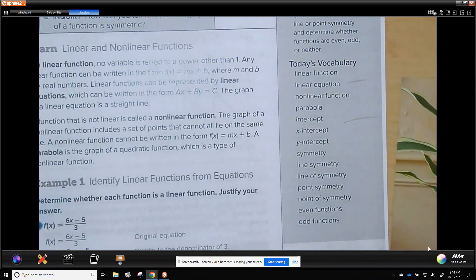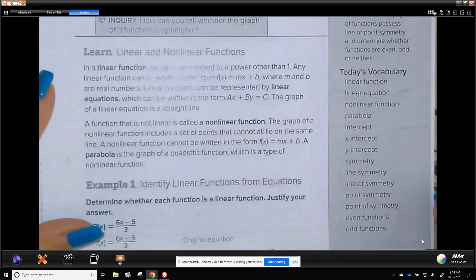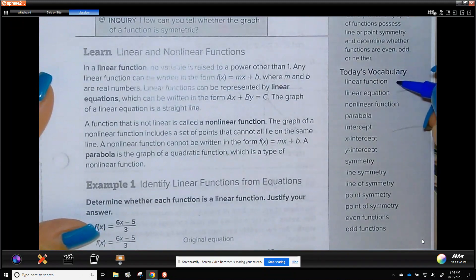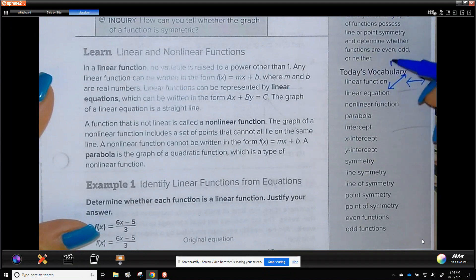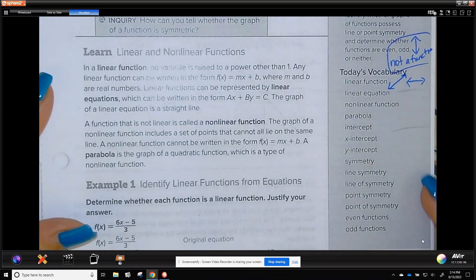So let's go through vocabulary first. Linear function, linear equation. A function is a straight line. A vertical line is not a function. A function can be horizontal or with a slope. Linear equation, the one you guys always memorize is y equals mx plus b, but we're going to show some other formats of that today.